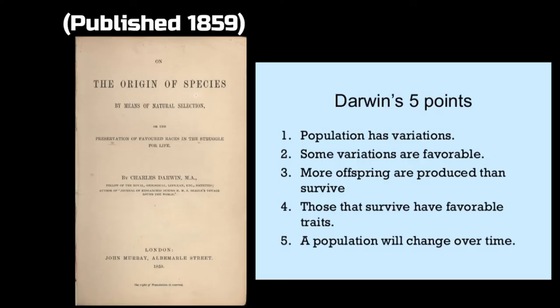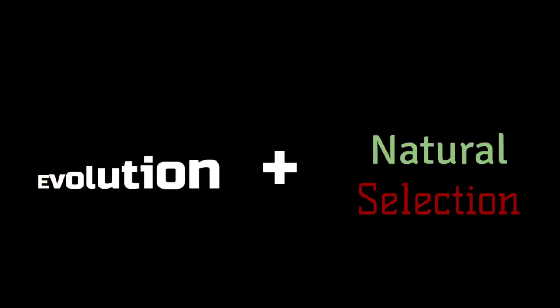As I'm sure you know, Charles Darwin is most often credited with creating the theory of evolution. His book, On the Origin of Species, was published in 1859 and it proposed the idea of evolution and natural selection. But what are those ideas?